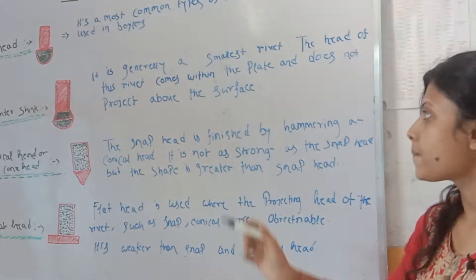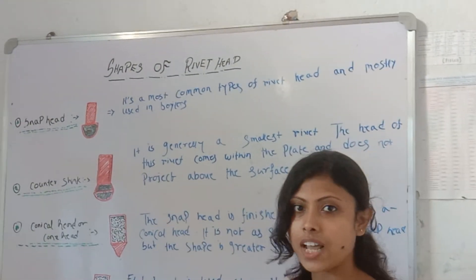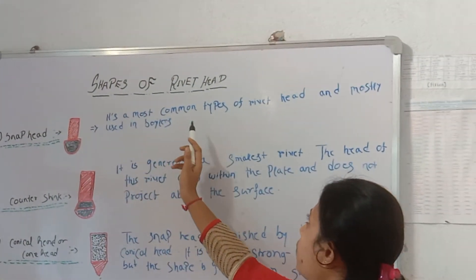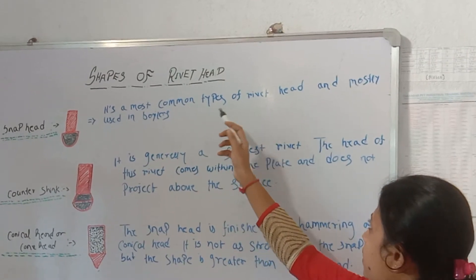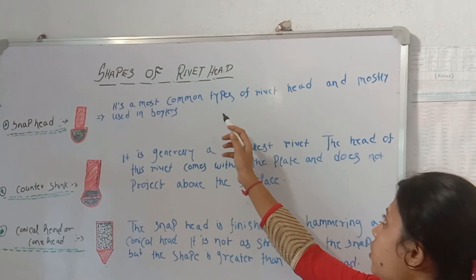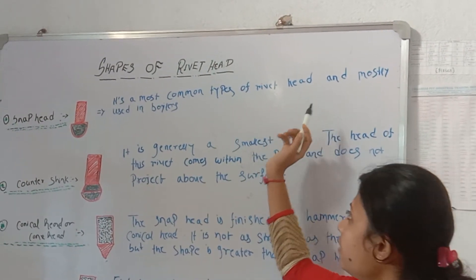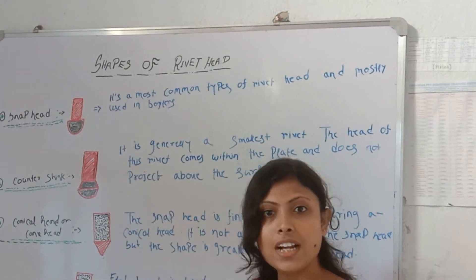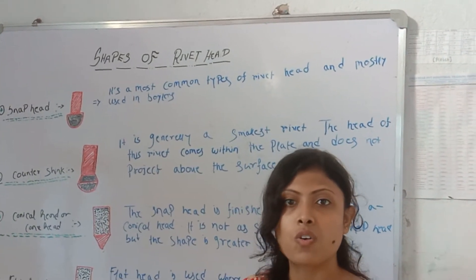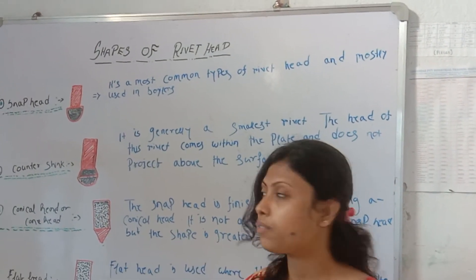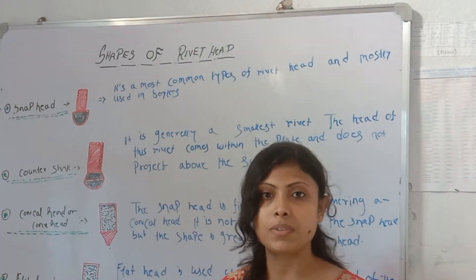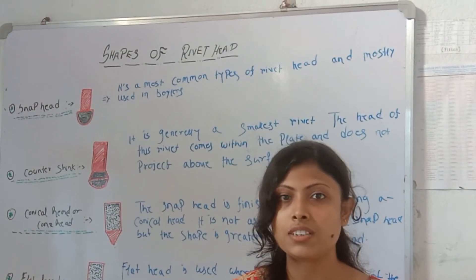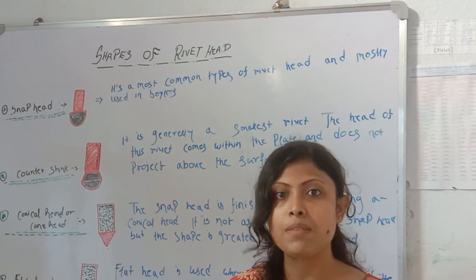This is the first — snap head. It's the most common type of rivet head and mostly used in boilers. In snap head, it's the most common rivet head, and the maximum use of boilers is in steam engines.